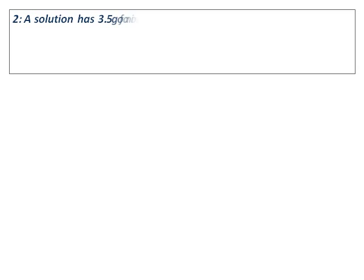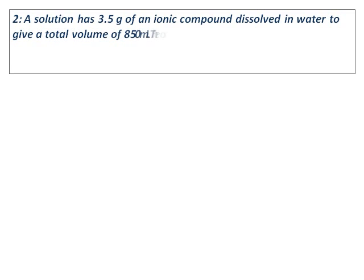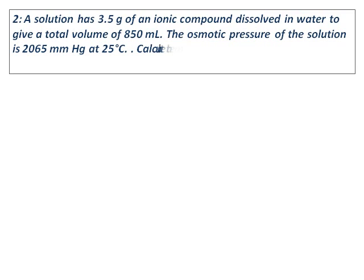This is the second question on osmotic pressure. A solution has 3.5 grams of an ionic compound dissolved in water with a total volume of 850 milliliters. The osmotic pressure is 2065 mm Hg. Calculate the molar mass of the compound. The van't Hoff factor i is given as 3.